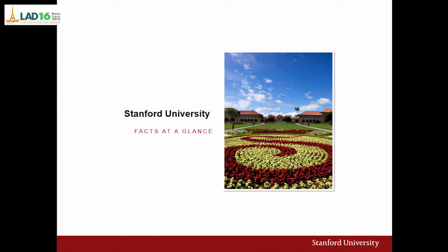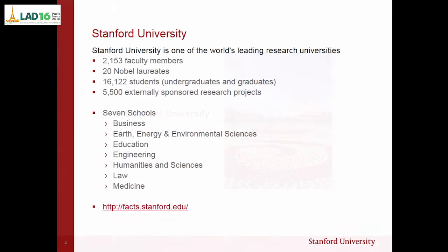Stanford, if you don't know, it's one of the world-leading research universities in the US, in California. It has more than 2,000 faculty members, more than 5,000 externally sponsored research projects with external grants. There are seven schools, and we at Research Computing cover all seven schools.